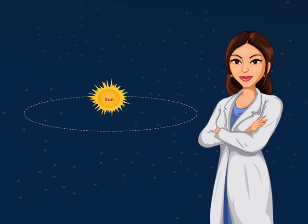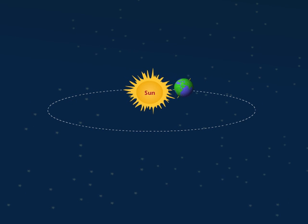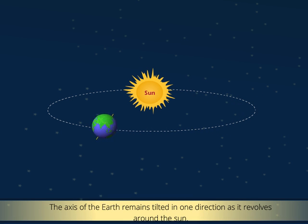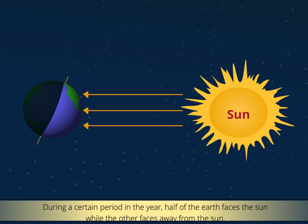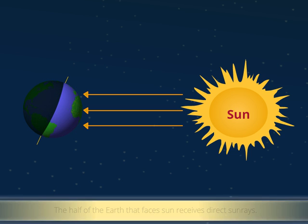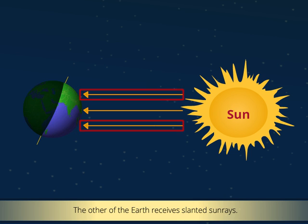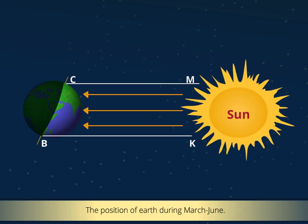Now let us see what causes the change in seasons. We all know that the Earth revolves around the Sun. The axis of the Earth remains tilted in one direction as it revolves around the Sun. During a certain period in the year, half of the Earth faces the Sun while the other half faces away. The half facing the Sun receives direct sun rays, while the other half receives slanted sun rays. This is the position of the Earth during March to June.